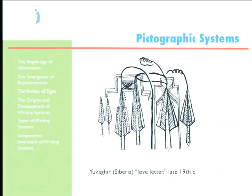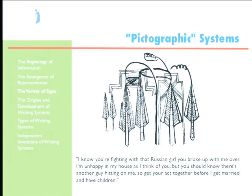Here's one extraordinary example from Siberia — may have been a game or an actual love letter. The sender is the woman, second from the right. She's thinking about her former boyfriend, the third from the right, who's with a Russian girl — as you can tell from the braid. They're not getting along, as shown by the cross. But she, the original girl, is being hit on by another guy. She's saying: 'I know you're fighting with that Russian girl you broke up with me over; I'm unhappy, but you should know there's another guy hitting on me, so get your act together before I get married and have children.' These systems, with appropriate contextual information, can be used to communicate a great deal.